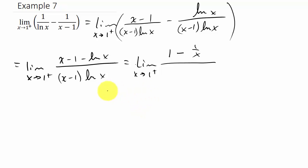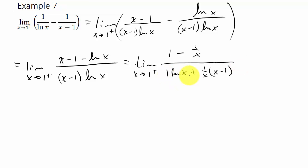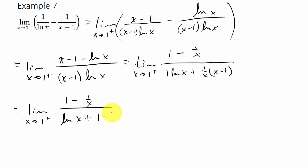Divided by — for the denominator, we have to use the product rule. So it's the derivative of the first function, which is 1, times the second function, natural log x, plus the derivative of the second function, which is 1 over x, times the first function. I can go ahead and distribute the 1 over x. So we get the limit as x goes to 1 from the right of 1 minus 1 over x, all over natural log x plus 1 minus 1 over x.